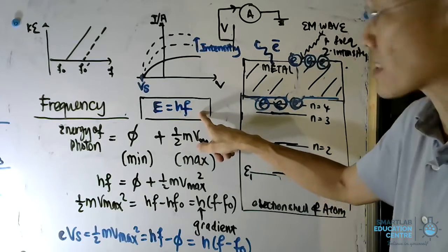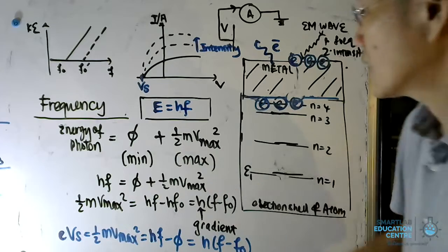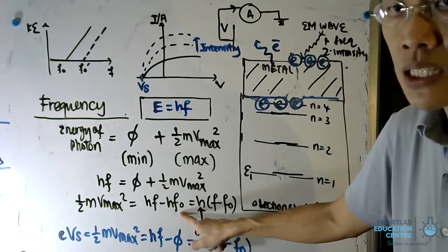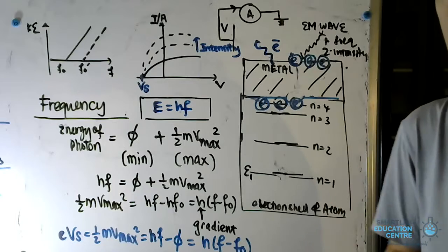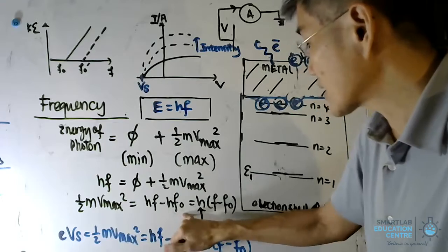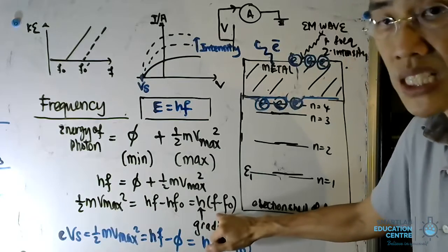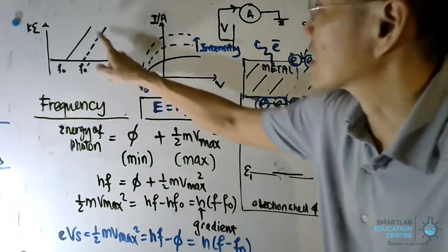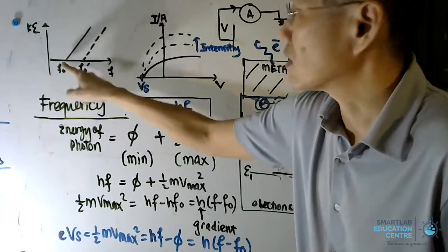Substituting Planck's equation gives: hf = work function energy + ½mv². The work function energy can also be expressed in terms of the threshold frequency f₀ — the minimum frequency before photoelectric emission is observable — so f₀ is a minimum value. Using this expression, we can plot a graph of kinetic energy versus frequency. The gradient of that line is h, Planck's constant.